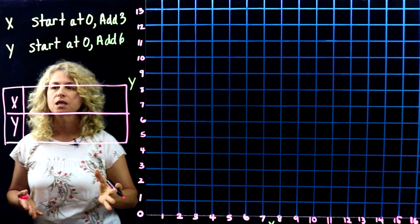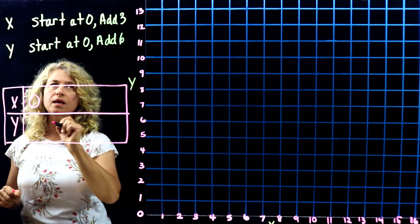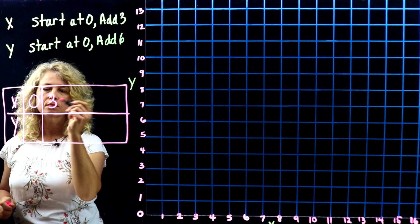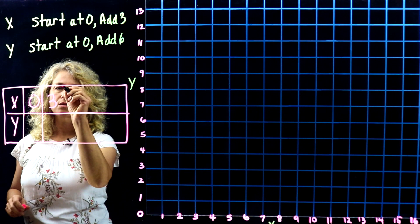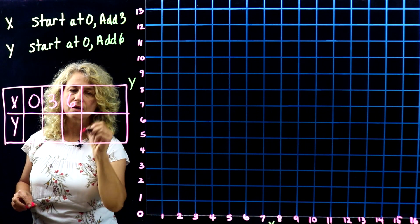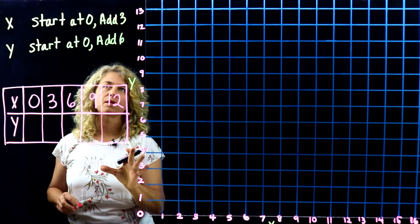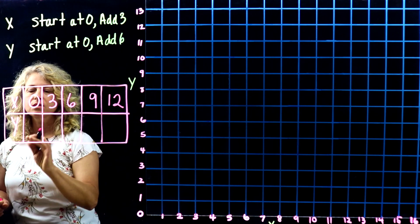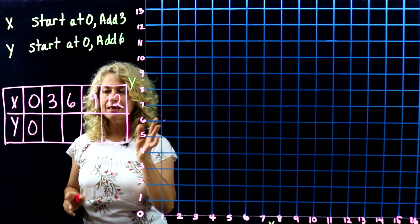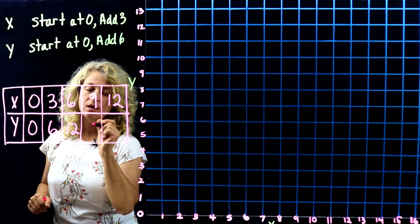Pattern X starts at 0, rule is add 3: 0, 3, 6, 9, 12. Now pattern Y starts at 0, rule is add 6: 0, 6, 12, 18, 24.